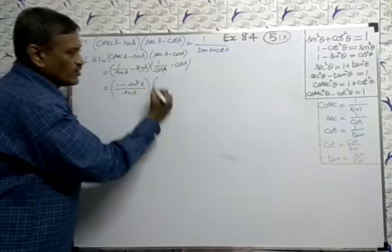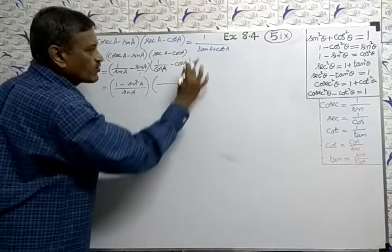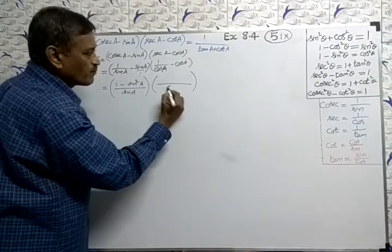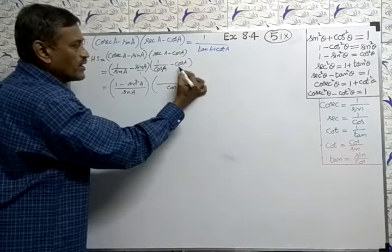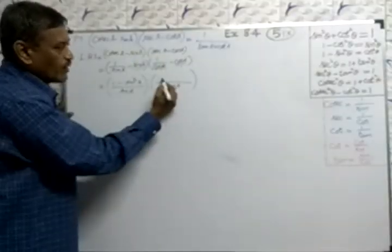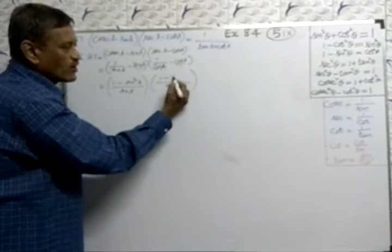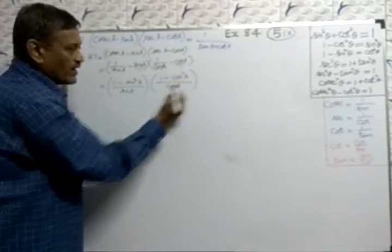Cross multiply. Same method. Cos A is LCM. In activity, what is that? 1 is that. Multiply 1 into 1, 1. Cos into cos, cos square A.